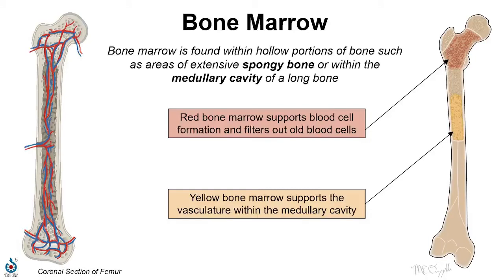Red and yellow bone marrow are found within open spaces in a bone and therefore have a close relationship with the vasculature to that bone. The function of red bone marrow is to produce new red and white blood cells and filter out old ones. Yellow bone marrow acts in a supportive role of the vasculature and a storage role of triglycerides, especially within the medullary cavity.